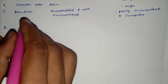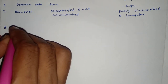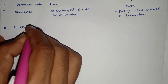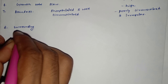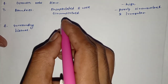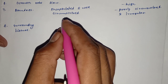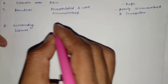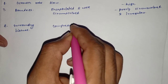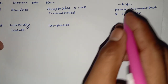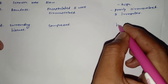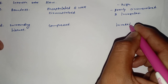The next criteria is the surrounding tissue. In the benign tumour, the surrounding tissues are compressed by the benign tumour, and in the malignant tumour the surrounding tissues are invaded by the malignant tumour.